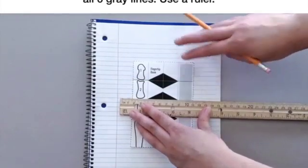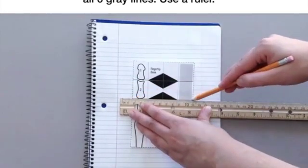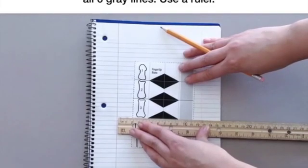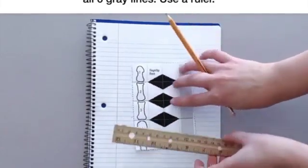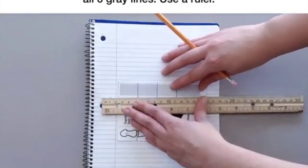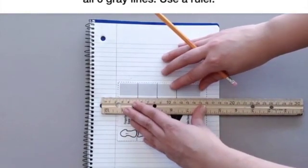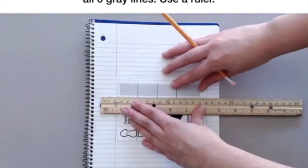Tracing these lines will make folding much easier in the next step. Instead of a notebook, if you have a blank piece of paper you can use it to put your template on and you can trace on top of that blank piece of paper.